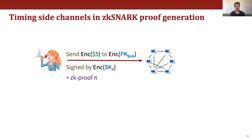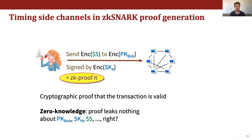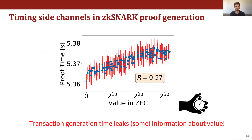So far we've talked about timing side channels that happen when receiving transactions. What about when transactions are sent in the first place? The sender's main computational burden is to produce a zero-knowledge proof that the transaction is valid. The zero-knowledge property of the proof system guarantees that the proof leaks nothing about transaction data. But somewhat surprisingly, in Zcash's implementation, we found a reasonably large correlation between the time it takes to generate a proof and the amount of currency being spent. This timing side channel is probably harder to exploit in practice, but it shows that great care has to be taken to ensure that zero-knowledge is truly guaranteed at the system and implementation level, in addition to the cryptographic level.